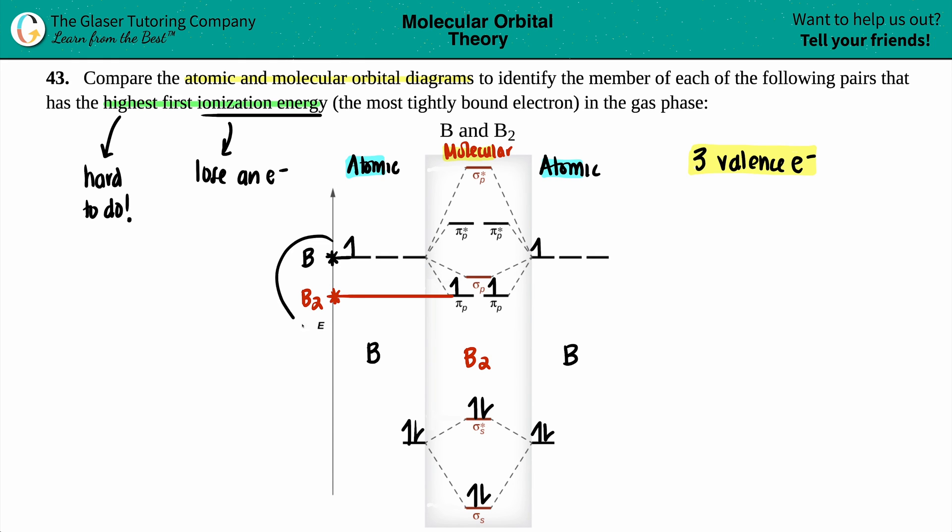Now in terms of energy, right, as you go higher and higher, you're talking about stability. The more energy that's in the molecule, the less stable that it is. So the atom B is less stable than B2, which is more stable.